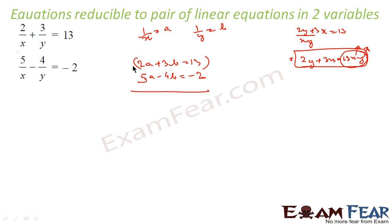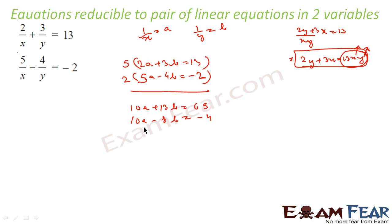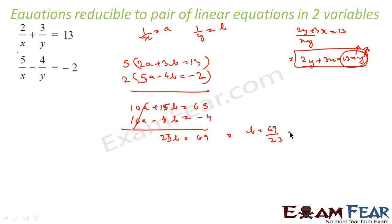Now this is a linear equation — we can solve it. Let me try the elimination method. To eliminate a, I'll multiply the first equation by 5 and the second by 2. So I get: 10a + 15b = 65, and 10a - 8b = -4. Subtracting: 15 - (-8) = 23b = 69, so b = 69/23 = 3.